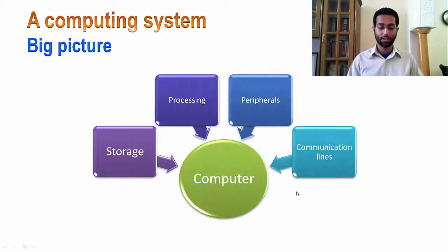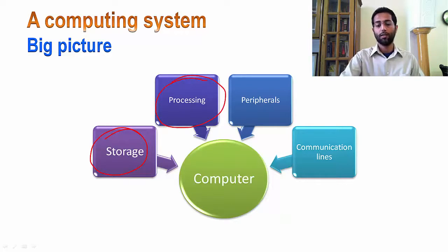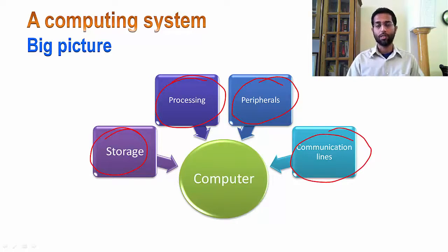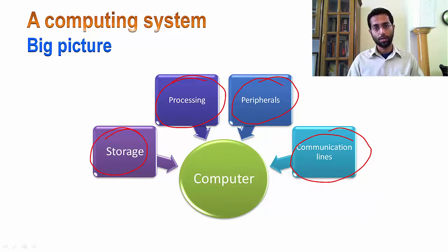Let's start by looking at the general structure of a computer. A computer consists of four major components. One is storage, another is a processing element or the CPU. You may have peripherals such as a camera, keyboard, or a monitor. And then it may have a communication interface which allows this computer to be connected to a network, for example, the internet. These four components make up most computers, though different computers may have slightly more or fewer components.